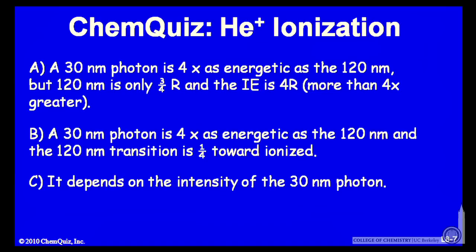Or B, a 30-nanometer photon is four times as energetic as the 120. And the 120 is a quarter of the way towards ionized. So the 30 should be sufficient.